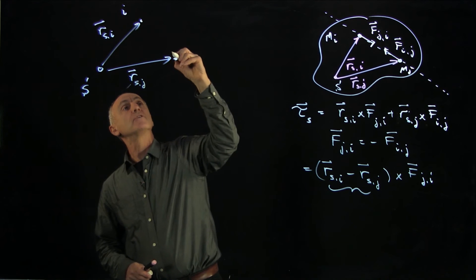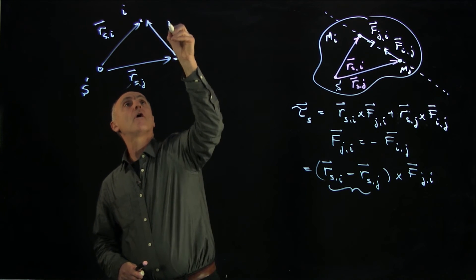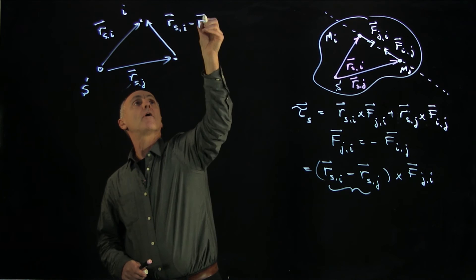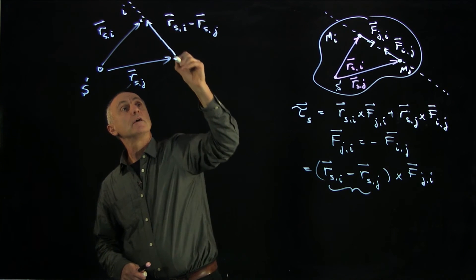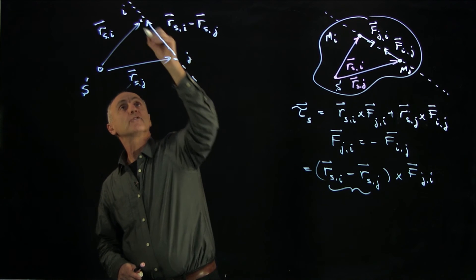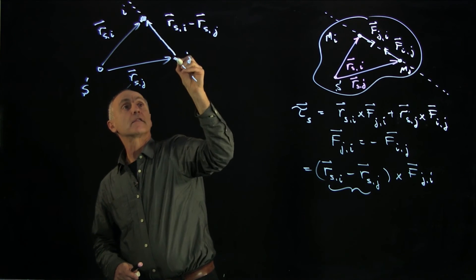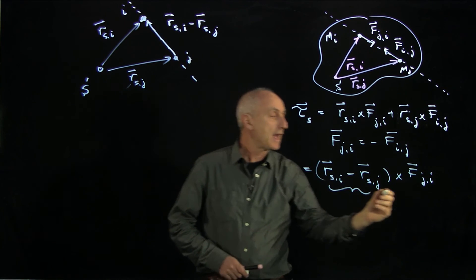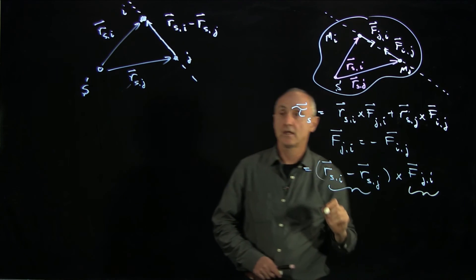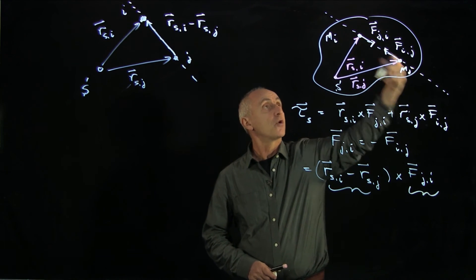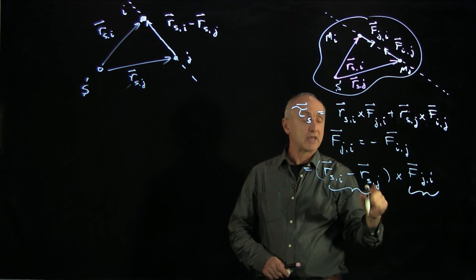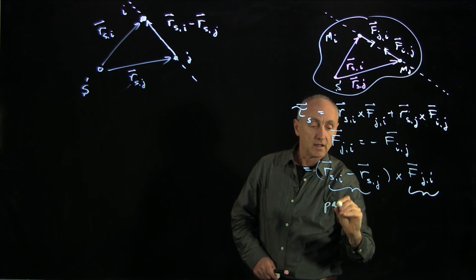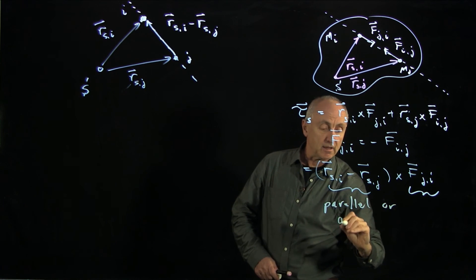And we want to now consider the vector RSI minus RSJ. Notice that this vector is directed along the line connecting the i-th and the j-th particle, and we've made an assumption that FJI is also along that line. So these two vectors in this particular case are either parallel or antiparallel.